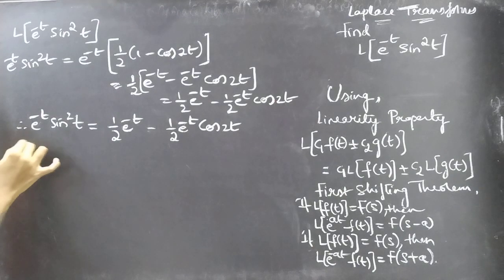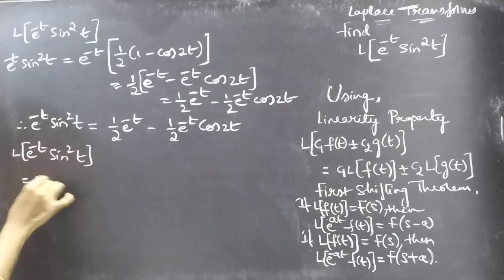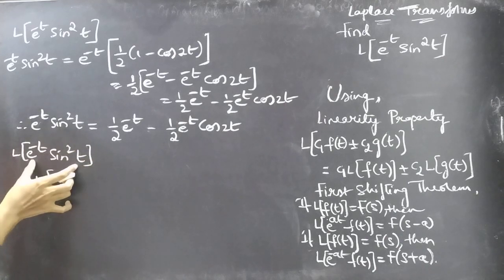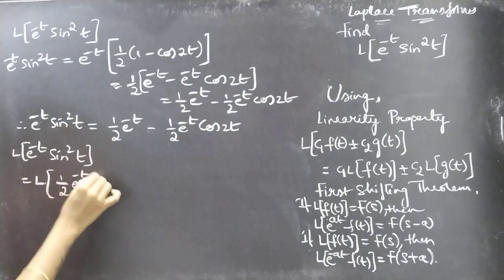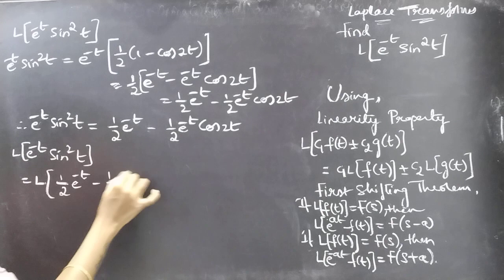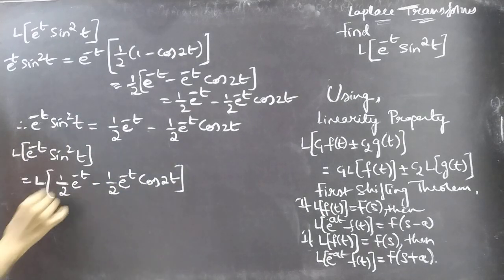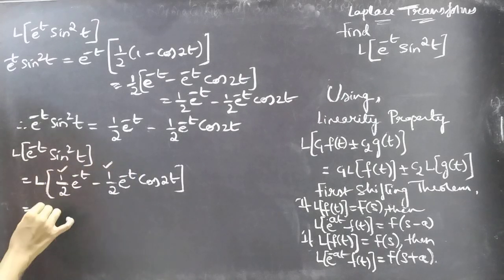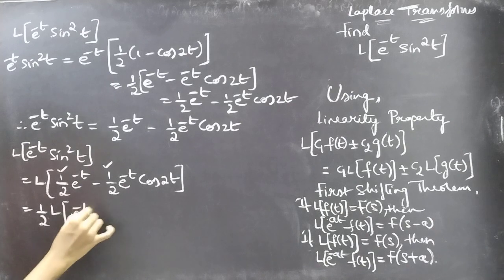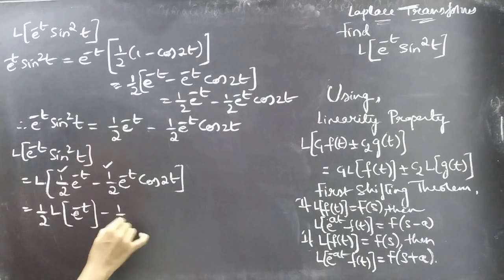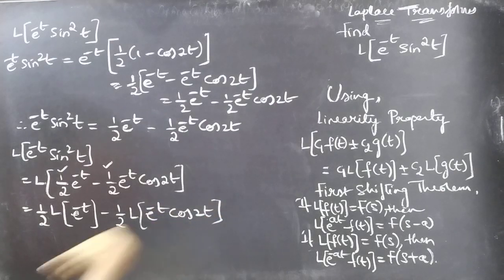Let's now find L of e to the power minus t sine squared t. Just replace sine squared t by this result. Then you will get L of 1 by 2 e to the power minus t minus 1 by 2 e to the power minus t cos 2t. Now let's apply the linearity property — constants come outside the L operator.